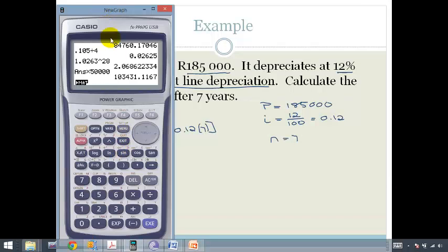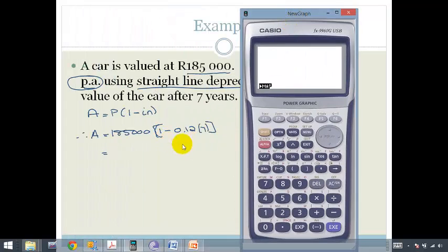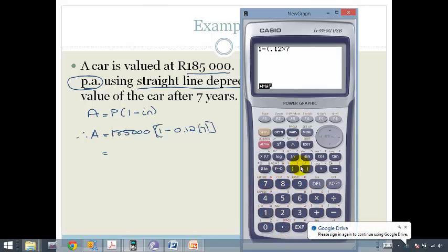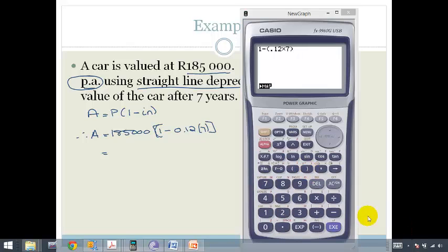So we get out our calculator and say, okay, let's go through this. We've got 1 minus bracket 0.12 times 7, close bracket, equals 0.16.